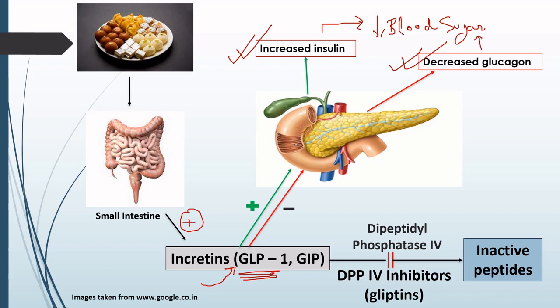The incretins GLP-1 and GIP are inhibited by the enzyme dipeptidyl peptidase-4, or DPP-4. We have a group of drugs that inhibit DPP-4, known as gliptins. A detailed lecture on glyptins is available — the link will be given in the description box.